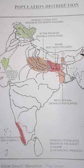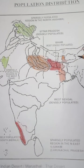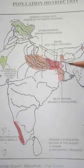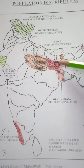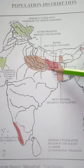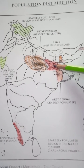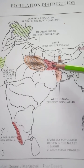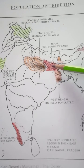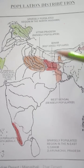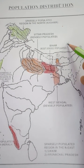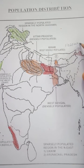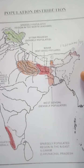A question will be asked: point out the area or the state which is having the highest density of population. In this case we will mark Bihar. You can see I have used dark red for maximum density — the most densely populated state of India — where we can see 1,100 persons per square kilometer of area.